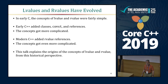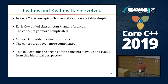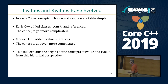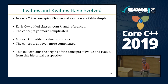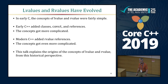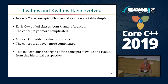In early C, L-values and R-values are fairly straightforward — not trivial, but not overly complicated. C++, by adding classes, the const keyword, and references to the language, complicated what an L-value and an R-value is. And then it really got messier with the introduction of R-value references in modern C++.